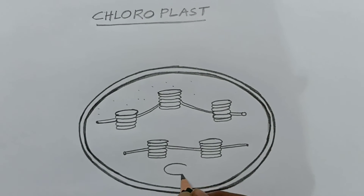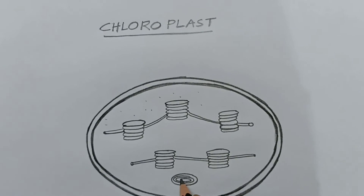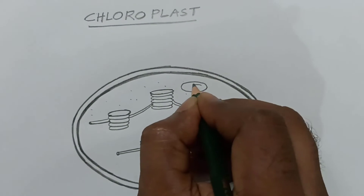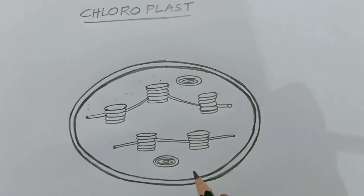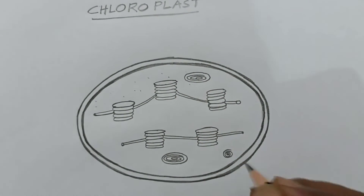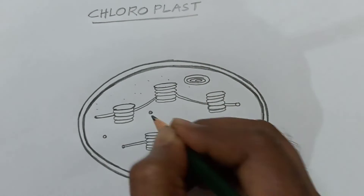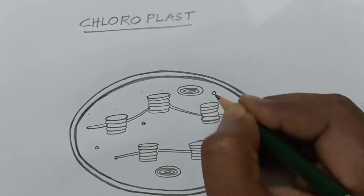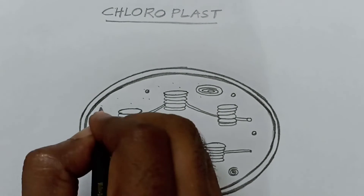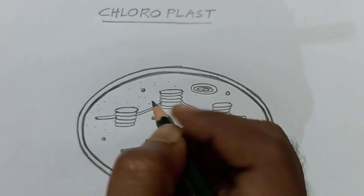Keeping some dots like this — now I am drawing a starch granule, and this is also another starch granule. This is a loop of DNA; you draw it like this. These are lipid globules, and this is the stroma.